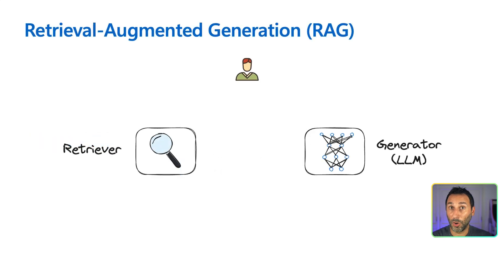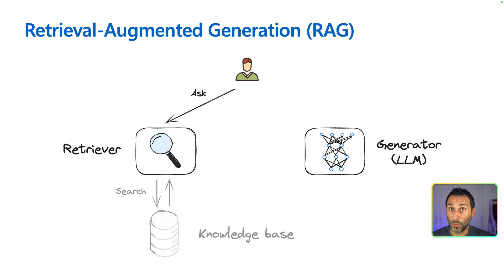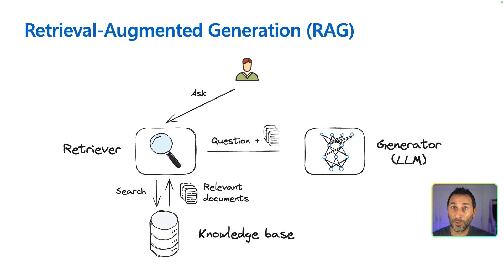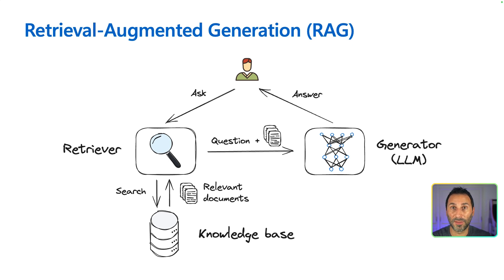How does RAG work? First, the user asks a question. The retriever searches for information in the knowledge base and returns documents relevant to answering the question. Then you send both the question and the documents to the generator, which creates the answer based on the information provided.